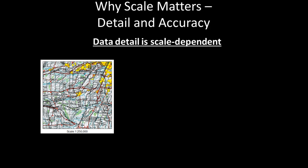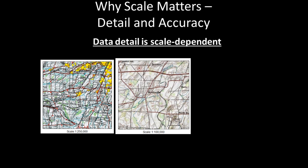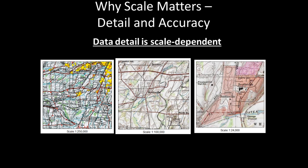Let's use a disaster management example to understand the two reasons why map scale is important. The first is that data detail is scale dependent. For example, a 1 to 250,000 scale map might be effective for planning relief supply transportation routes on major highways. A 1 to 100,000 scale map would be effective for planning where to station relief supplies around a village. A 1 to 24,000 scale map would be effective for evacuation planning of specific locations such as houses or neighborhoods within a village.